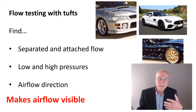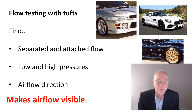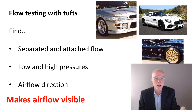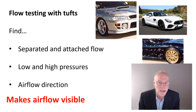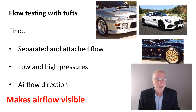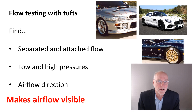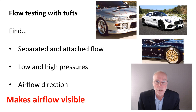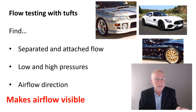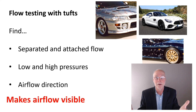So what are some of these test techniques? The first one is flow testing with tufts — stick little bits of yarn like wool on your car and look at the airflow pattern. It's a powerful way of finding separated and attached flow. You can easily use tufting to determine if a wing is stalled or is actually working as a proper wing. Flow testing can also indirectly show where there are low and high aerodynamic pressures, and can show airflow direction. Zero cost, really easy — but you must know how to interpret what those tufts are showing you.